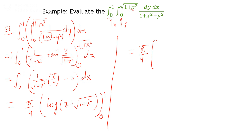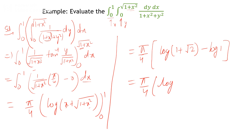Now integrate π/(4√(1+x²)) with respect to x from 0 to 1. Here π/4 is a constant, and the integral of 1/√(1+x²) is log(x + √(1+x²)). Applying the limit from 0 to 1: the upper limit gives log(1 + √2), and the lower limit gives log(1) = 0. So the final result is (π/4)·log(1 + √2).